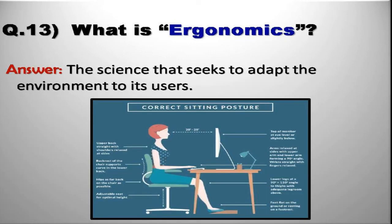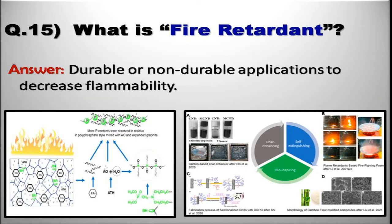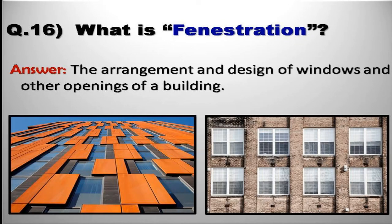What is ergonomics? The science that seeks to adapt the environment to its users. What is façade? The face or front view of a building or article. What is fire retardant? A durable or non-durable application to decrease flammability. What is fenestration? The arrangement and design of windows and other openings of a building.